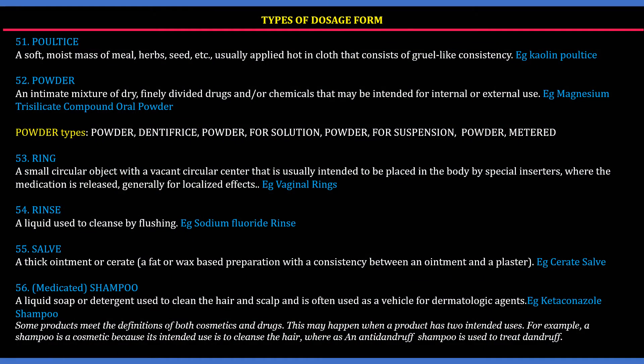51. Poultice: A soft moist mass of herbs, seeds, etc. that is applied hot in a cloth. Example: kaolin poultice. 52. Powder: A mixture of dry finely divided drug that is used for internal or external applications. Example: magnesium trisilicate compound oral powder.